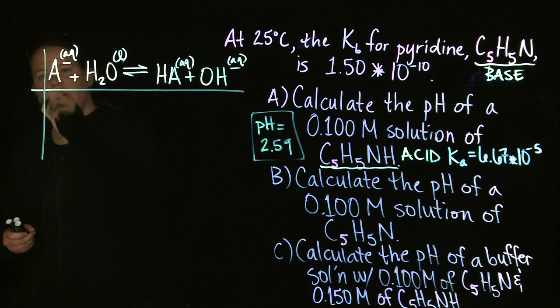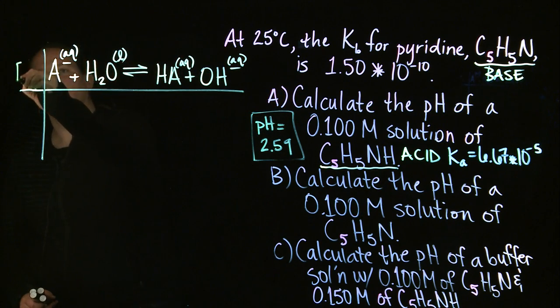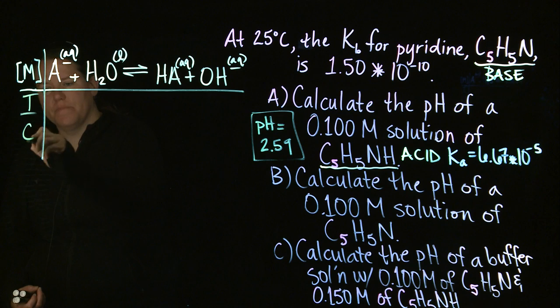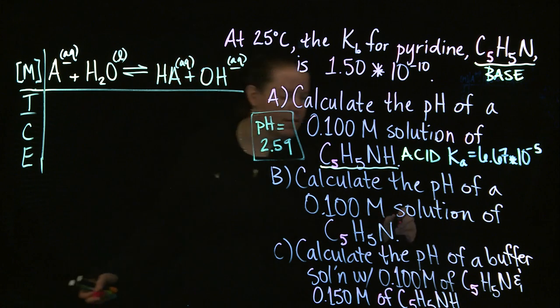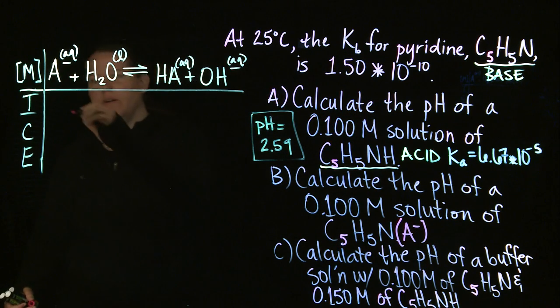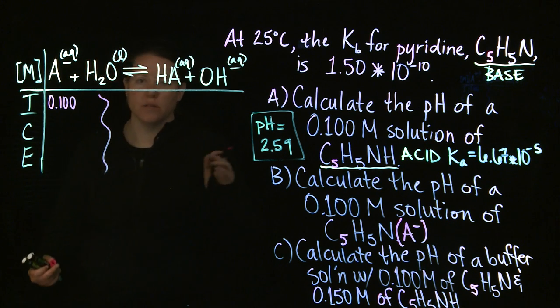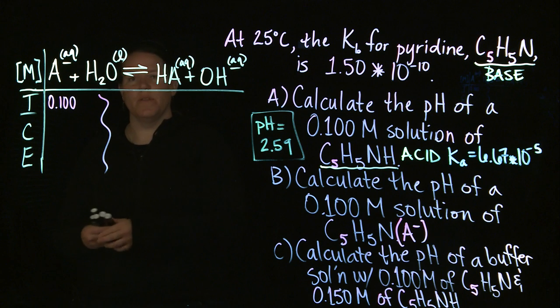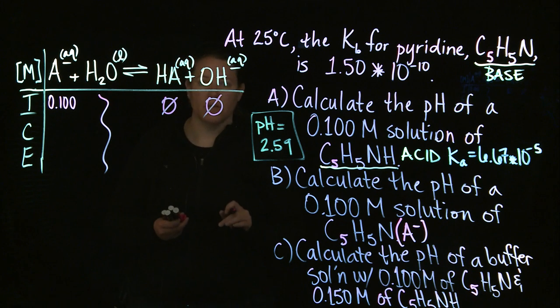So let's do an ICE table with this. Because we have a Kb, the equilibrium amount, we have an initial amount of the base. We're going to do an ICE table based off of the base. ICE tables, you begin with your initial amount. My initial amount in this case, this is going to be essentially my A minus. My initial amount, again, is 0.100. I do not need to consider water because water is a liquid. Liquids and solids are eliminated from both the K expression and the ICE table.